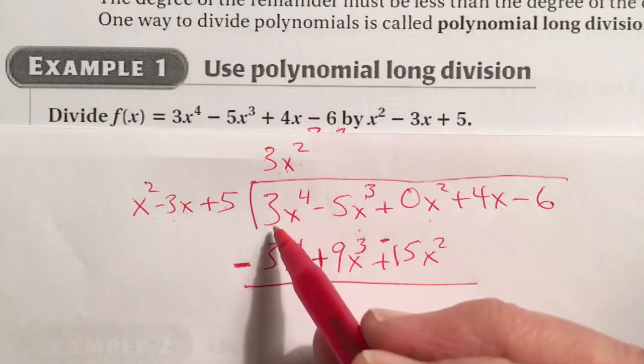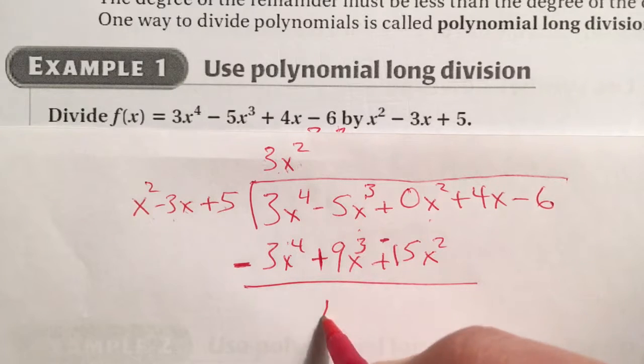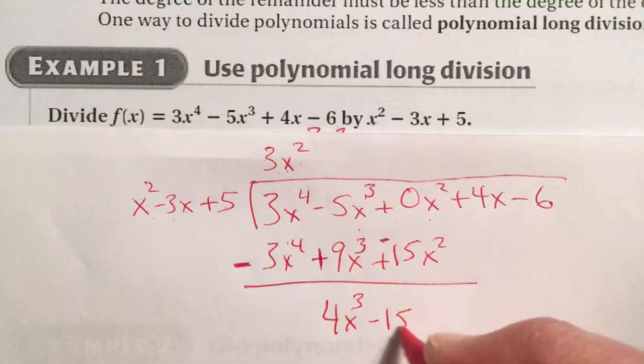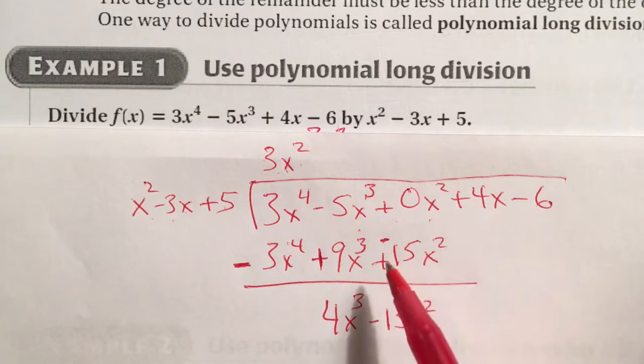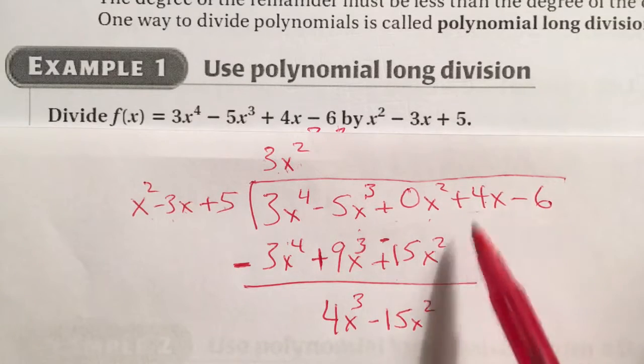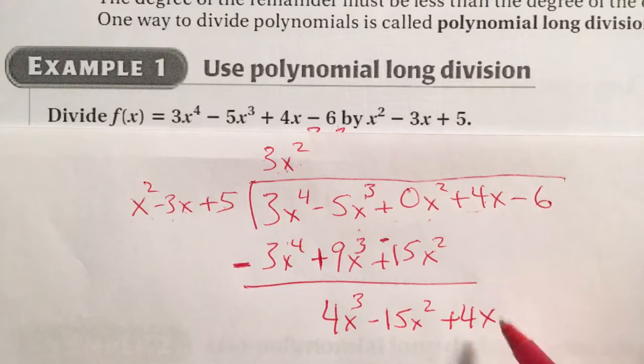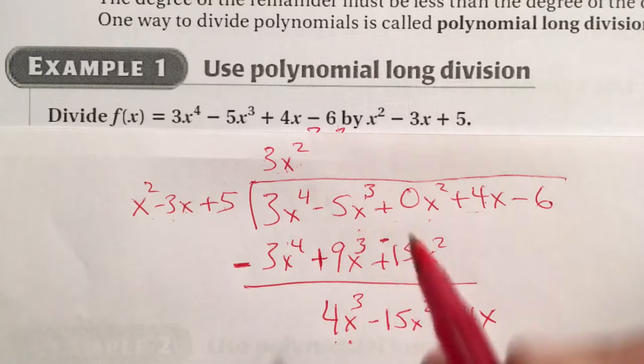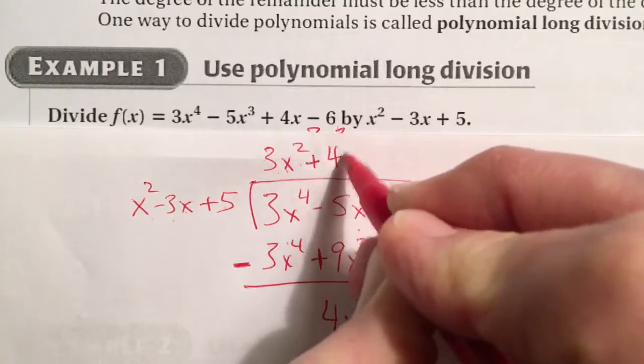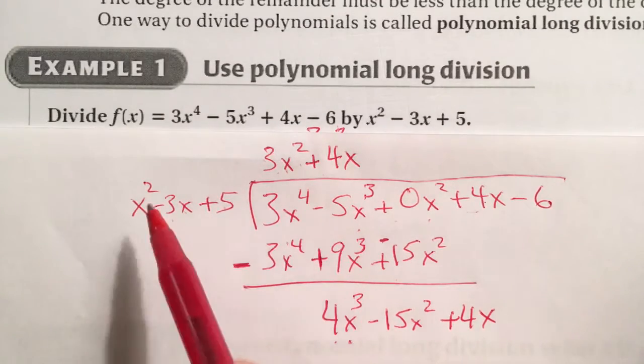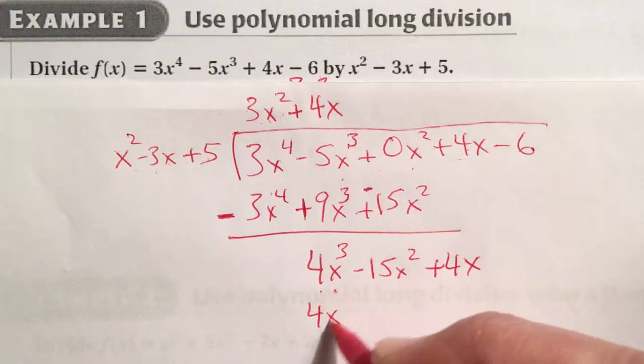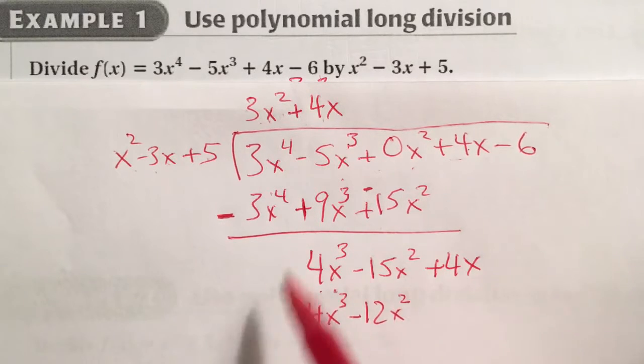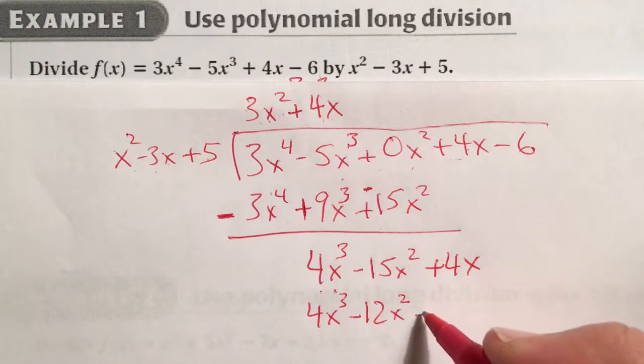We're going to subtract each column. These go away, that's beautiful. Negative 5x^3 plus 9x^3 becomes 4x^3. Negative 15 and 0 is just minus 15x^2. What would we do with the numbers? We brought down the next column. So let's bring down the 4x. How many times can we get x^2 to go into 4x^3? How about 4x? So plus 4x. 4x times x^2 is 4x^3, it matches perfectly. 4x times negative 3x is negative 12x^2. 4x times 5 is plus 20x.